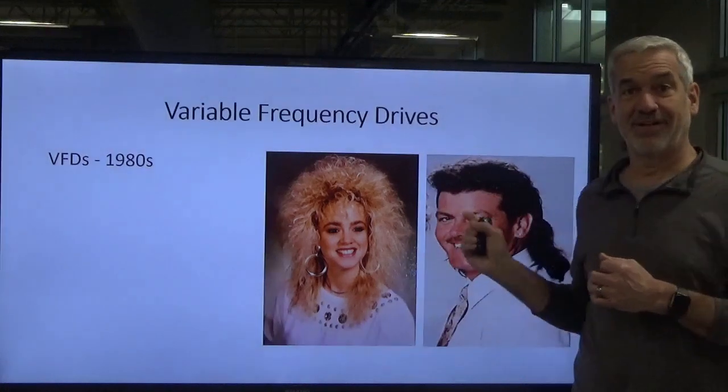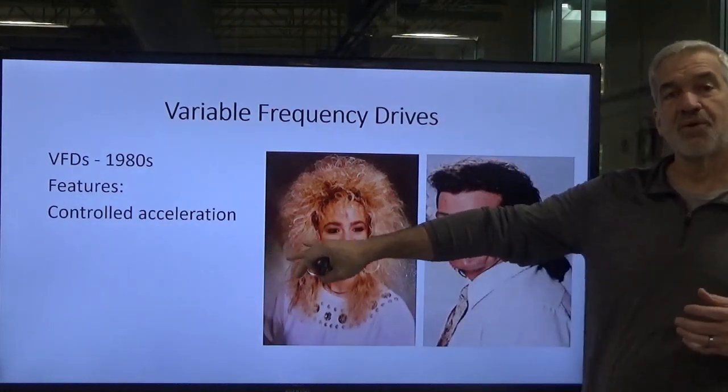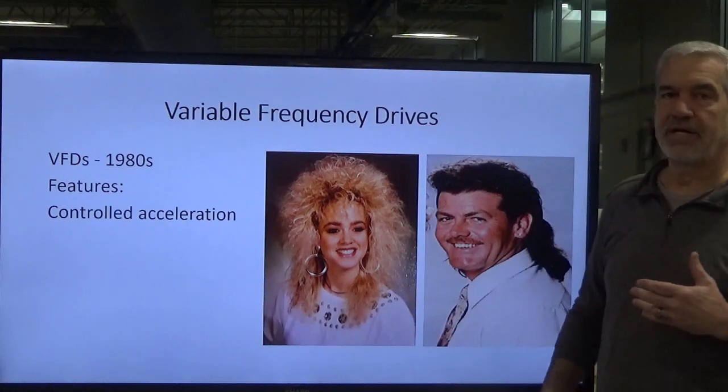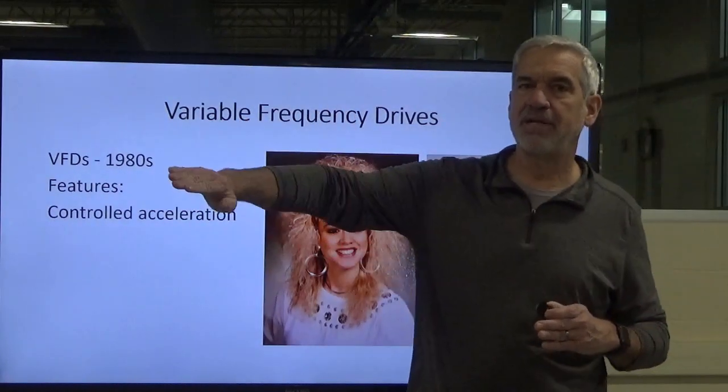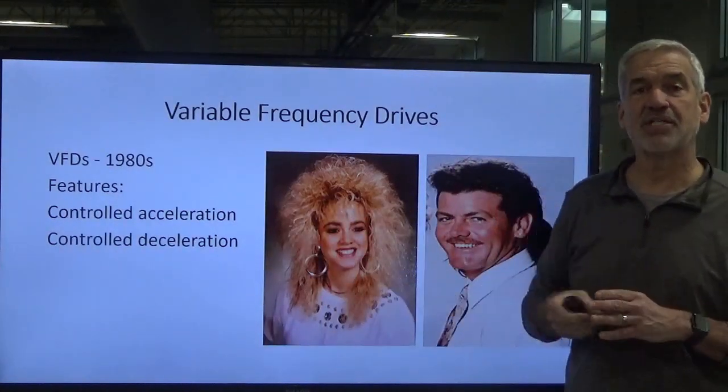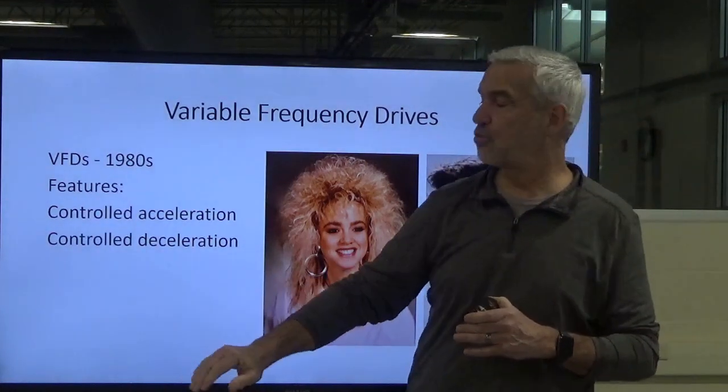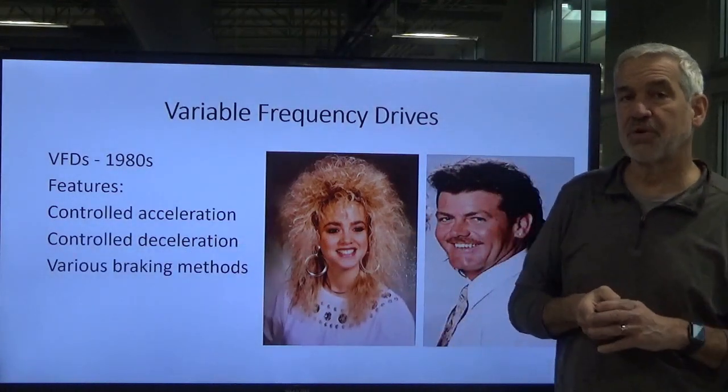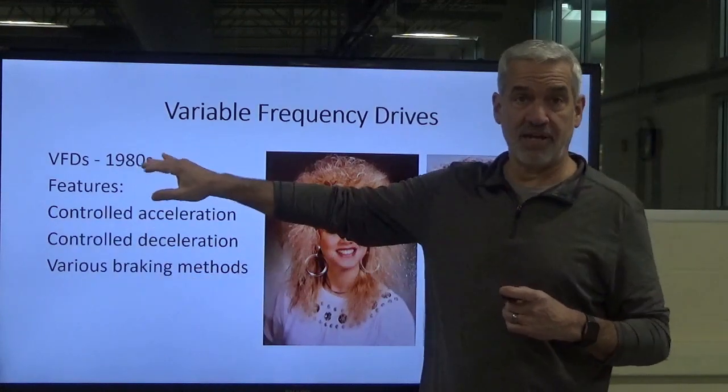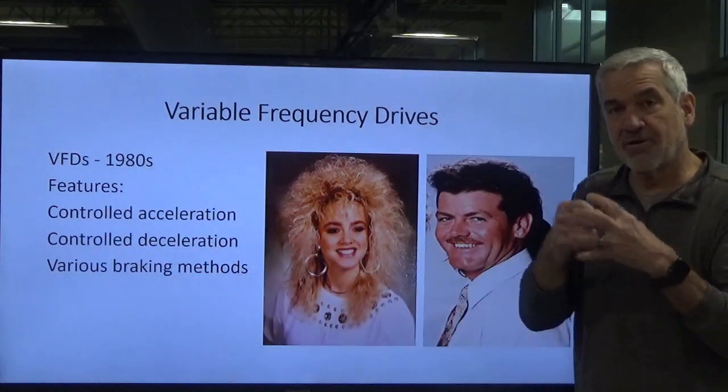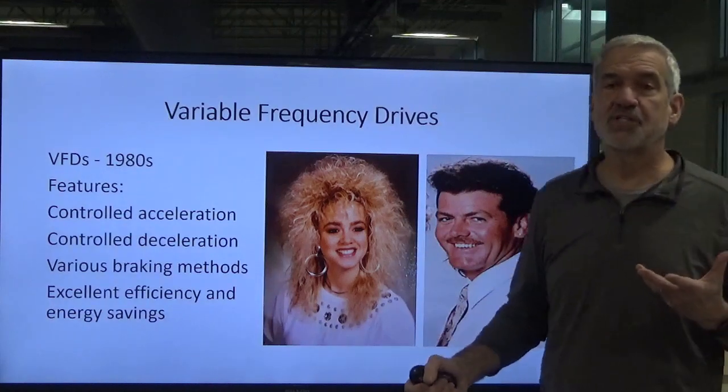Along comes the 1980s and the advent of the VFD. This gave us controlled acceleration, that's our ramp up speed. We could go from zero to full speed over the course of 10, 15, 20, 30, 60 seconds, however long we wanted to ramp from zero to full speed. It also gave us controlled deceleration, going from full speed down to zero. Instead of a flat shut off or hard stop, we could slowly control the deceleration. We had different braking methods. The VFD can add an electrical brake, not mechanical, that we'll talk about shortly.